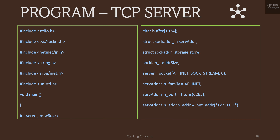Now we'll look at the TCP server program. All necessary header files are included. I define a file descriptor for the server, storing the return value of the socket function — using AF_INET, SOCK_STREAM, and protocol 0 for IPv4 TCP. Then I declare a sockaddr_in structure called serveraddr and initialize its three members: family as AF_INET, port number converted using htons, and the internet address member set by converting the localhost address 127.0.0.1 using inet_addr.